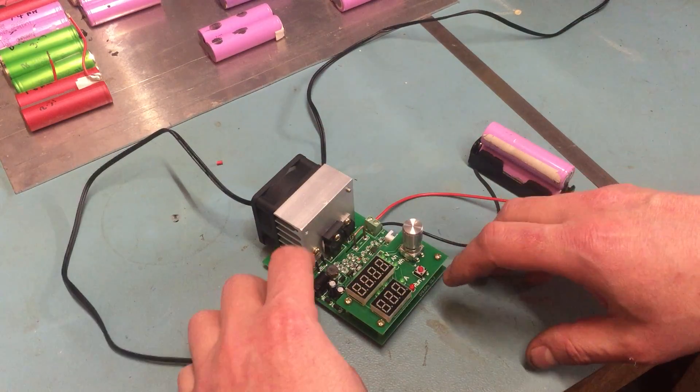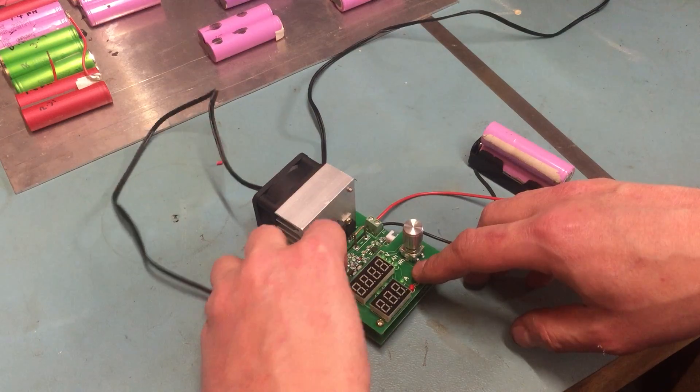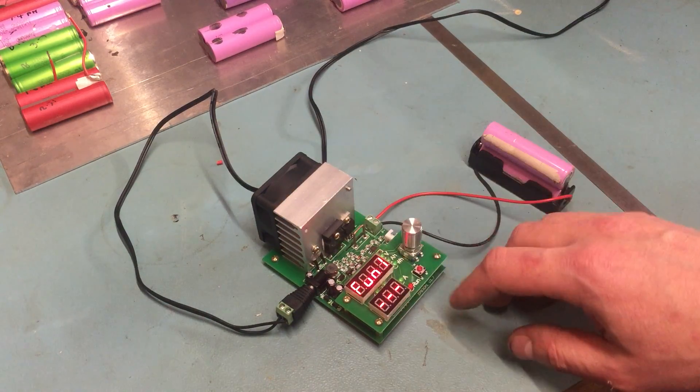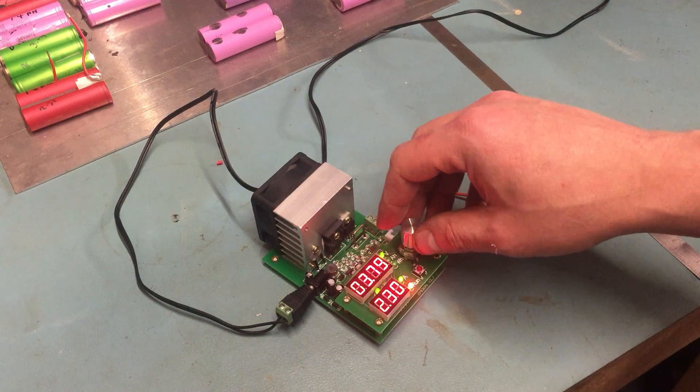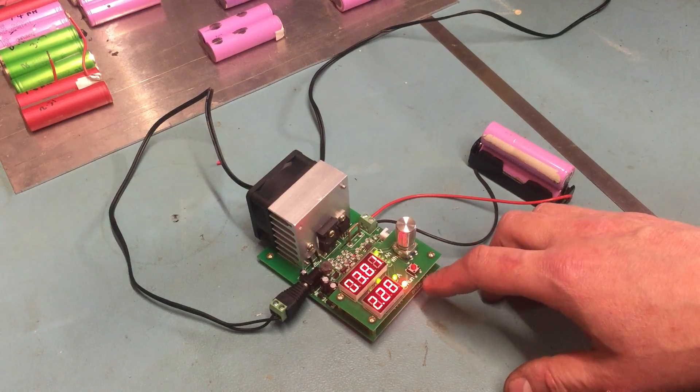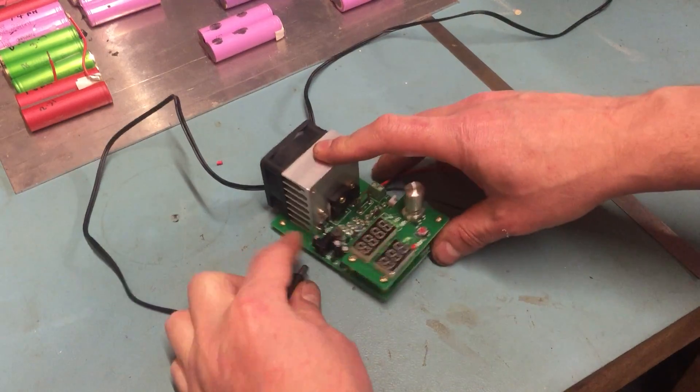You can put it into constant current mode. You just set the voltage that you want and the current you want. But it's not really that much use to be honest with you. The battery test mode is much more interesting.